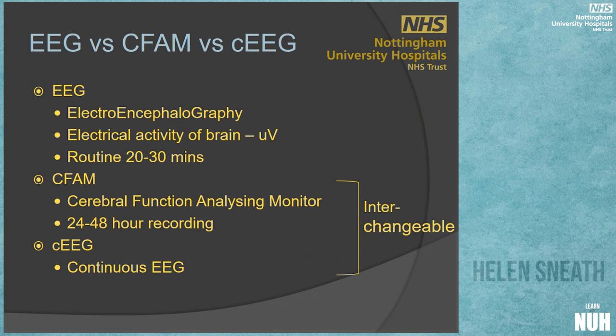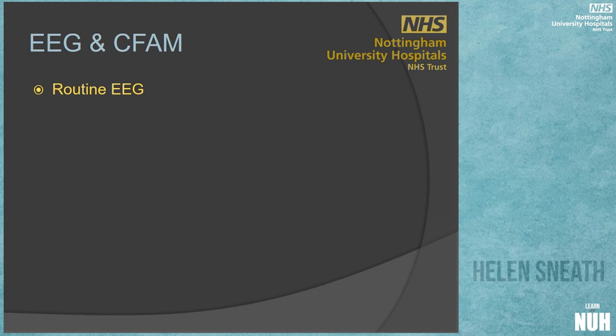We still call our monitoring CFAM monitoring. If you were to Google papers and extra information on CFAM, not a great deal would come up, because now the term used is continuous EEG. Those two terms are largely the same. Most continuous EEG is done mainly in the US, where they record a huge number of channels and trended information. Whereas when we do our CFAM monitoring, we're just doing two channels, but the two are interchangeable to a certain extent.